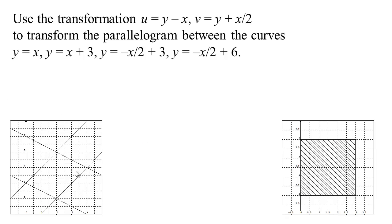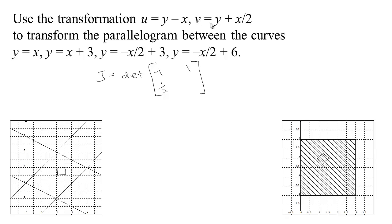Let's do another example. We had this transformation before — there was this complicated parallelogram, and our transformation turned it into a nice square. We want to know the stretching factor. To find the Jacobian, we take the determinant of the derivative matrix: the derivative of u with respect to x is negative 1, the derivative of u with respect to y is 1, the derivative of v with respect to x is 1 half, and the derivative of v with respect to y is 1. So the determinant is negative 1 minus 1 half, which is negative 3 halves.